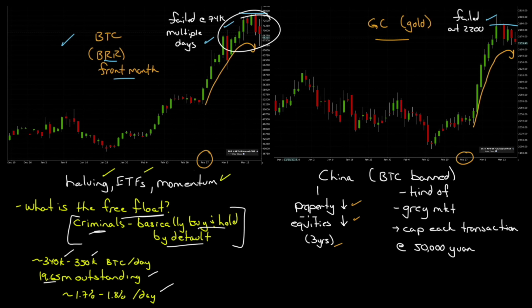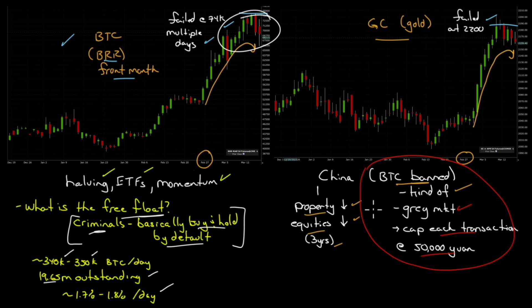For gold: China — property prices down, equities down for three years. Where's money going to go? Not into property, not equity. So it's going into gold. Bitcoin is banned in China — kind of — the policy from the top says yes it's banned, but there is a gray market. If you cap each transaction at 50,000 yuan you avoid scrutiny, so it's still going on. For citizens who are more cautious, they're probably going into gold, and that could be why Bitcoin and gold seem to be moving similarly.